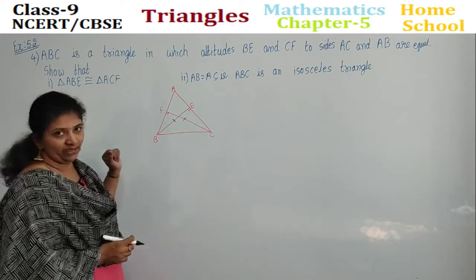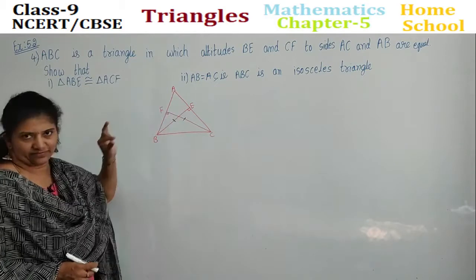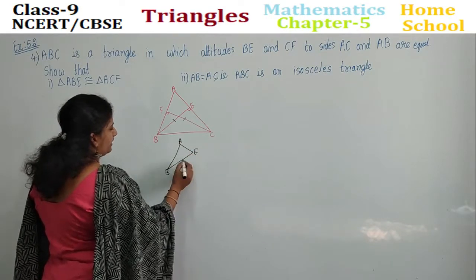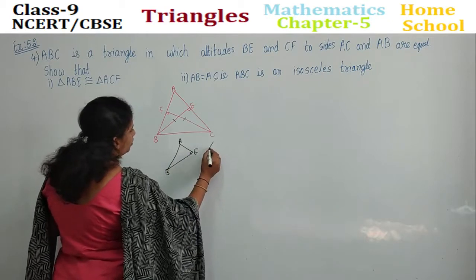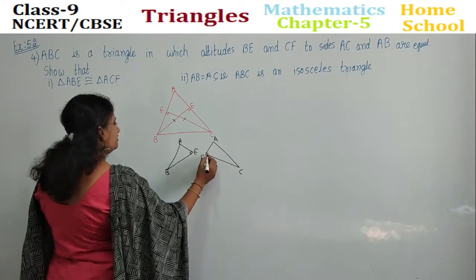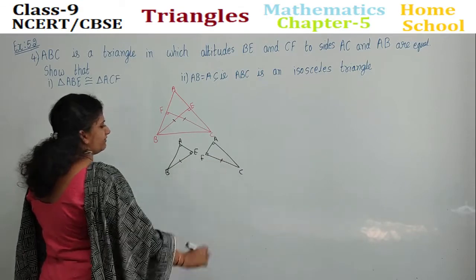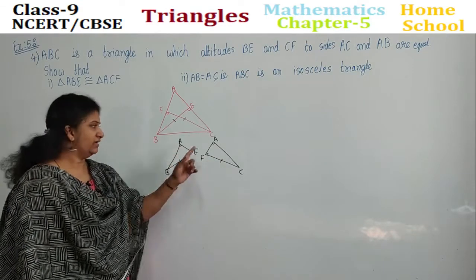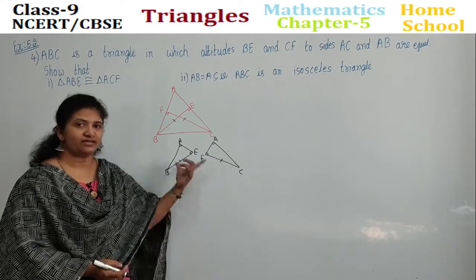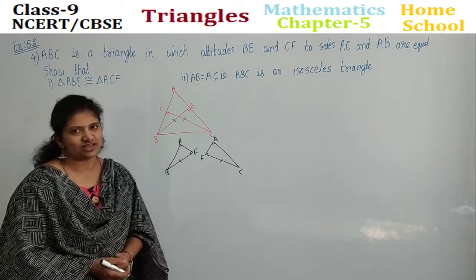What we need to prove: first, triangle ABE is congruent to triangle ACF. Let's draw the triangles separately. Triangle AEB has a right angle, and triangle ACF also has a right angle. This is a common angle. And what did they give? BE is equal to CF. By angle-angle-side, these two triangles are congruent. If they are congruent by CPCT, other sides are equal — AB is equal to AC — making it an isosceles triangle.